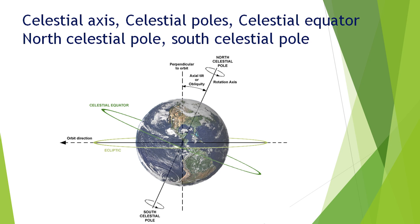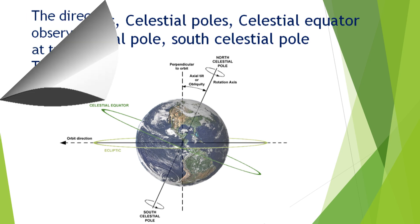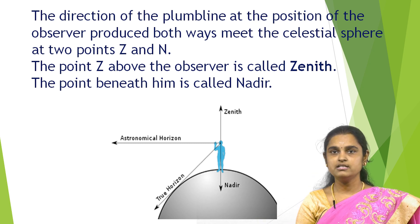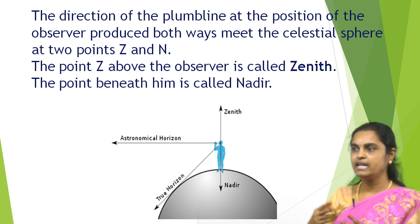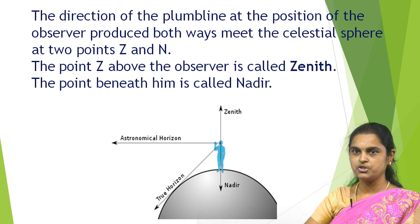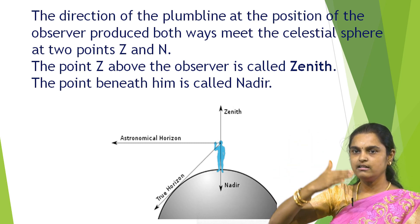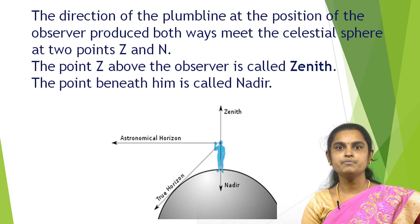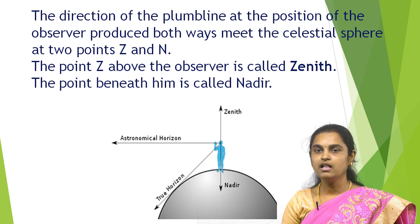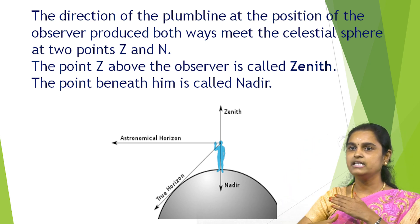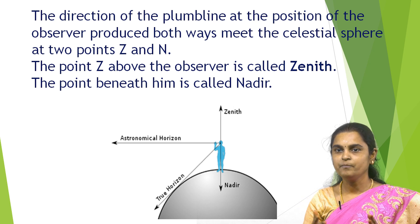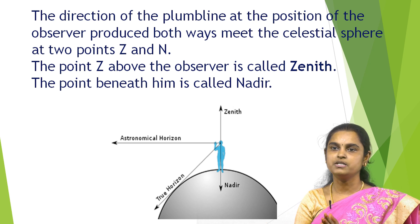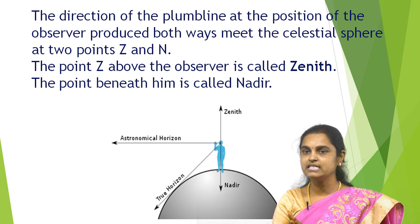Here we can see a clear description of a man standing on the celestial sphere, defining zenith and nadir. Imagine a plumb line from the observer's position — the top point is called zenith and the bottom point is called nadir. The direction of the plumb line produced both ways meets the celestial sphere at two points Z and N. The point Z above the observer is called zenith, and the point beneath is called the nadir point. An observer below the horizon cannot see objects — this is called the invisible horizon.